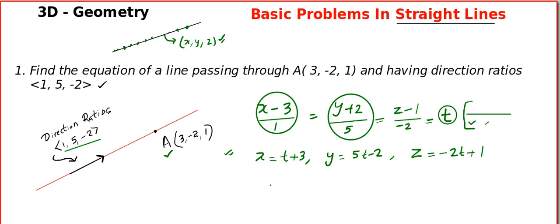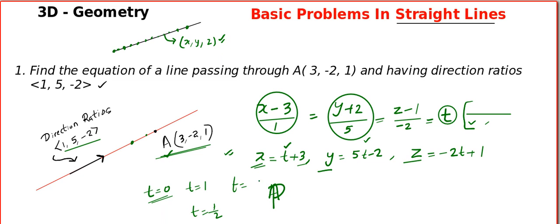Finding the parametric form actually means you are able to access every point on the line. It gives you the coordinates of x, y, z — and x, y, z represents every point on the line. For example, when you plug in t equals 0, you get the same point which is on the line. When you plug in t equals 1, you get another point. When you plug in t equals 1/2, you get another point. When you plug in t equals 100, you get some other point on the line. So finding the parametric form means you are able to access every point on the line.